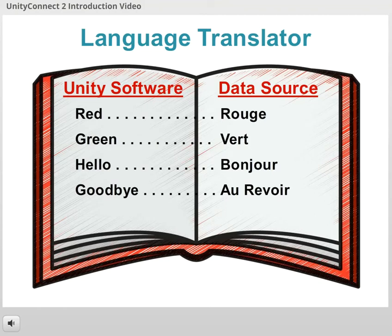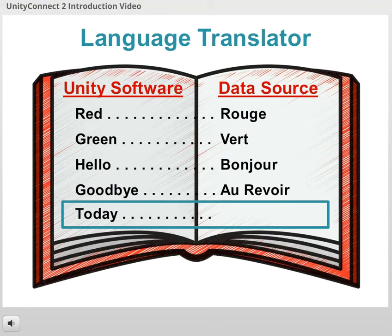As long as its French to English dictionary is up-to-date, Unity Connect is able to handle everything without your assistance. However, any time you start running something new, you'll need to define it in the dictionary so Unity Connect knows how to translate it.